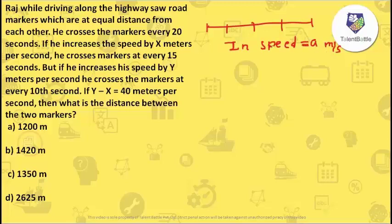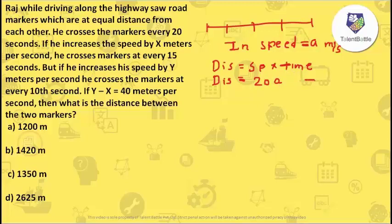I will consider the initial speed of Raj as 'a' meters per second since we don't know the exact speed. Using the formula distance equals speed into time, speed is 'a' and time is 20 seconds, so the distance from each marker is 20a. I will consider this as the first equation.